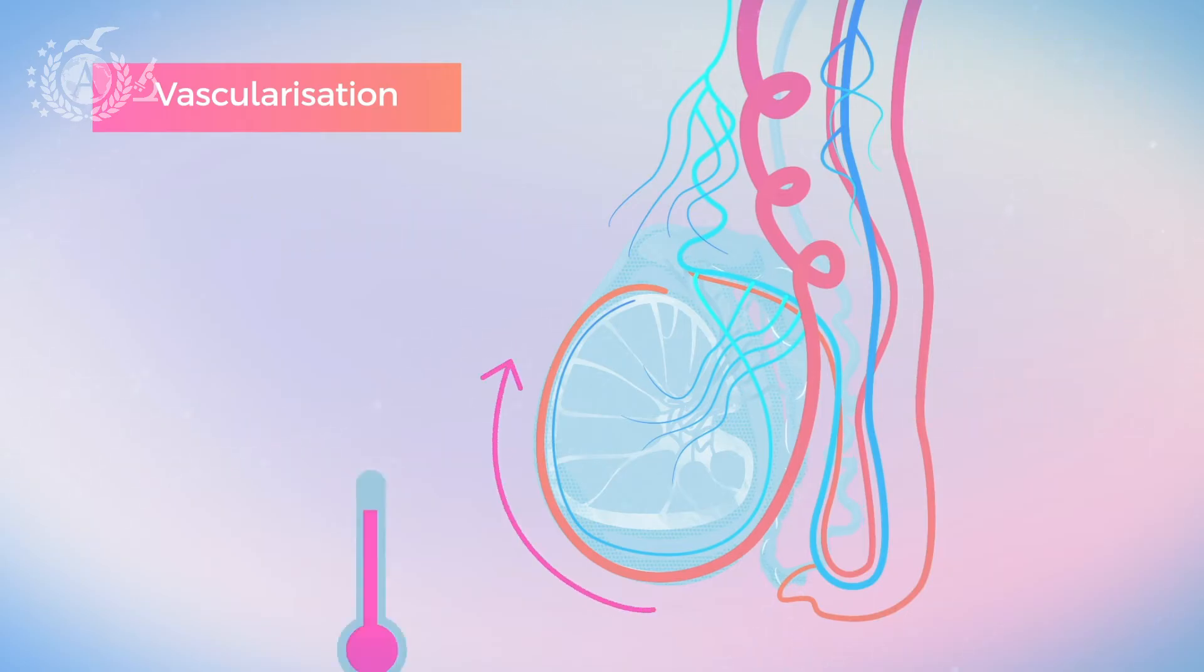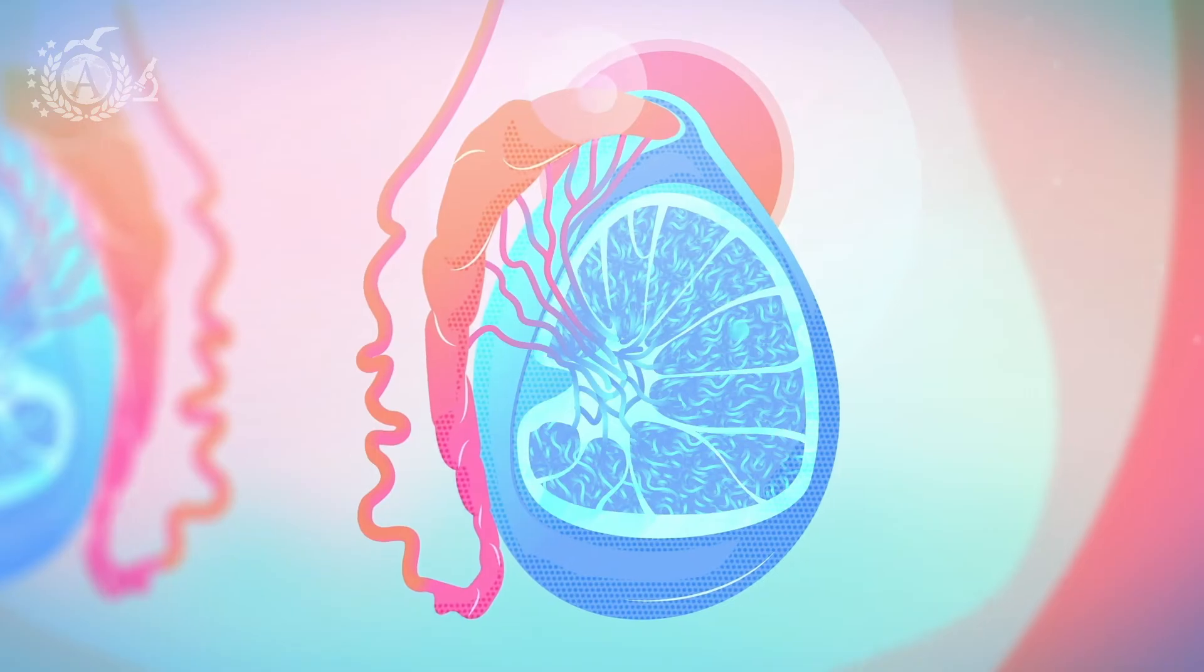This device is extremely important for cooling the arterial blood that reaches the testicle. The sperm cells, in fact, mature well when cold, and that's why testicles are outside the abdominal cavity.